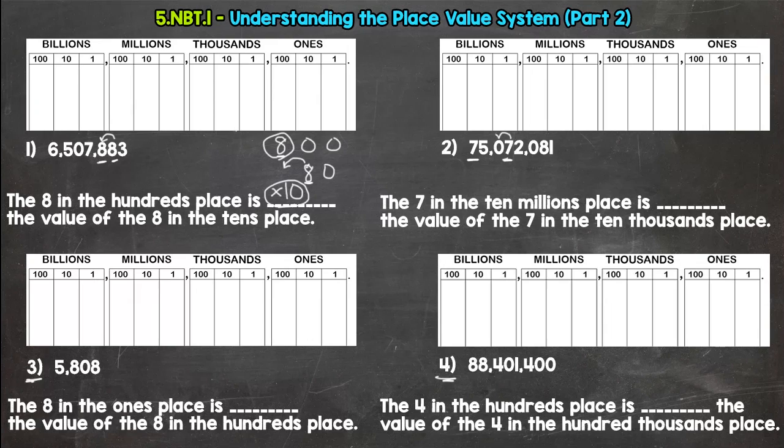So we're getting larger in value. 1, 2, 3 jumps. 3 places to the left. So 3 jumps. I'm going to draw it out over here. Each jump, the value increases by 10. So we have 10 times 10 times 10. Which is not 30. 10 times 10 is 100 times 10 is 1,000.